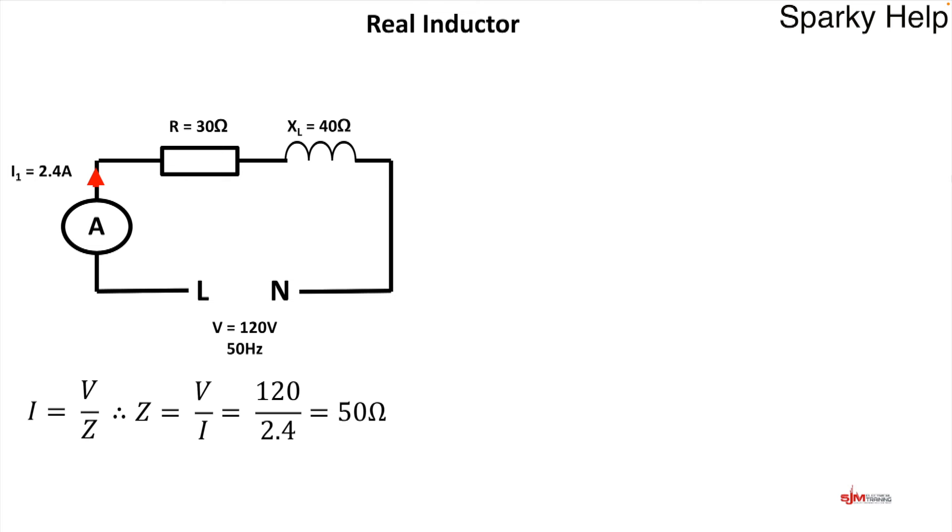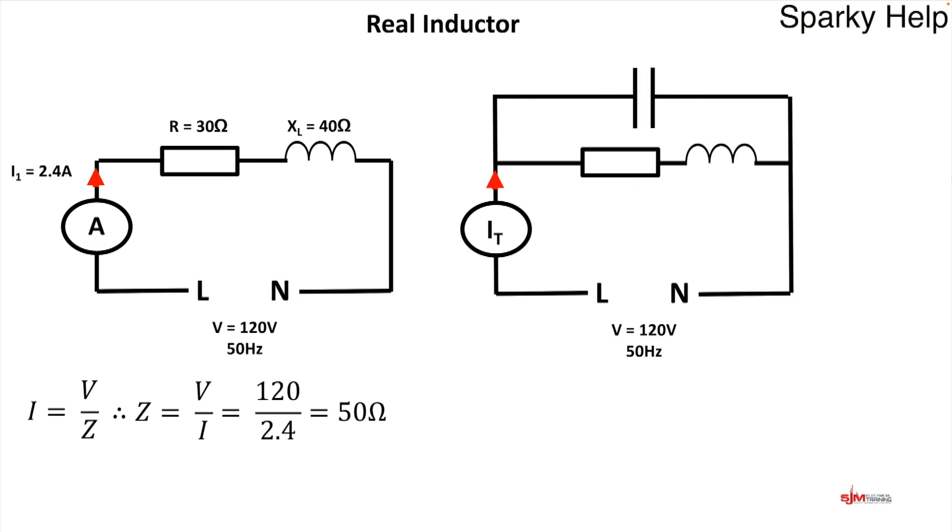We can work backwards on this. To work out Z, although hopefully you may be able to work it out, if not, check out the video. But if we do 120 divided by 2.4 gives us a Z of 50 Ohms.